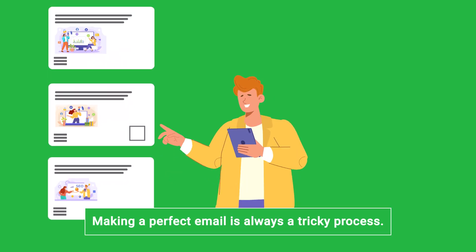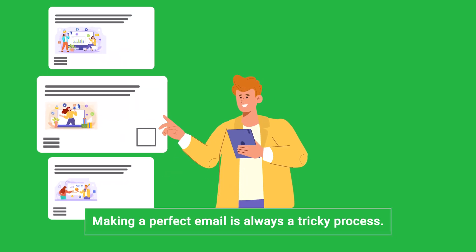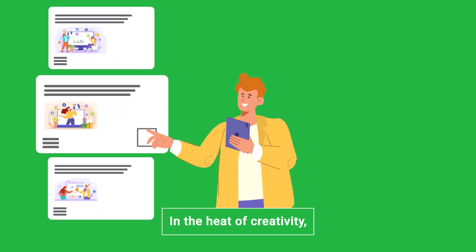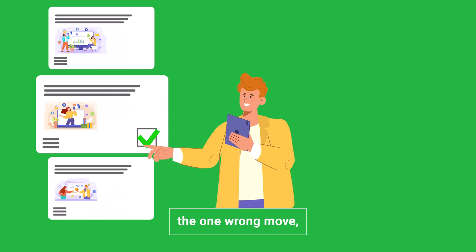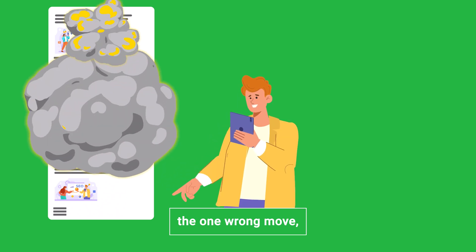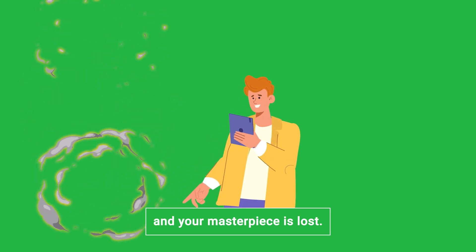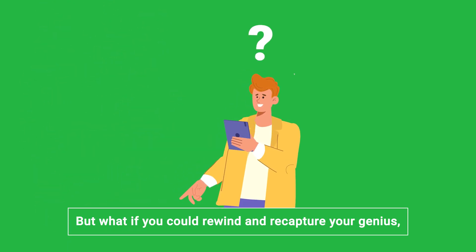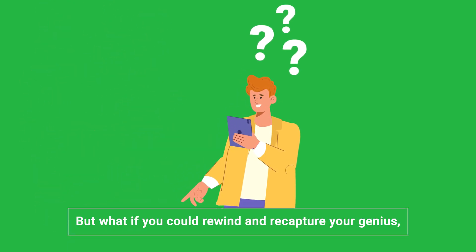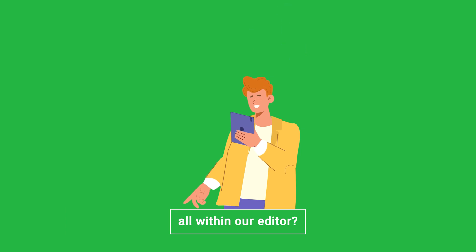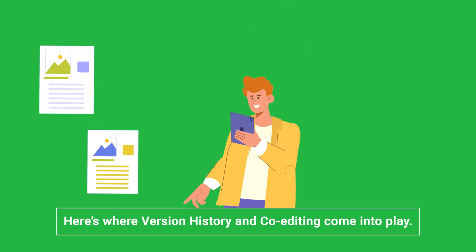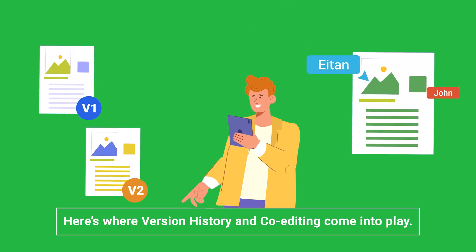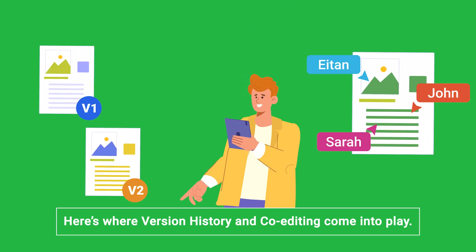Making a perfect email is always a tricky process — in the heat of creativity, one wrong move and your masterpiece is lost. But with the ability to rewind and recapture your genius, all within our editor, here's where version history and co-editing come into play.